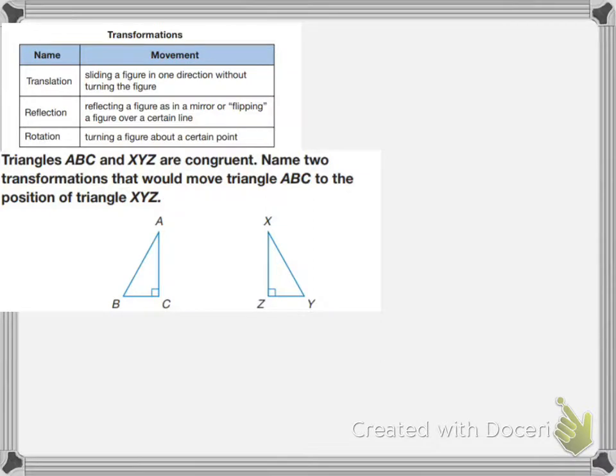So the first one is obvious. I have to move it in that direction, so that is going to be a translation. And after moving it, my triangle would end up looking like this right next to it. And that would be ABC.